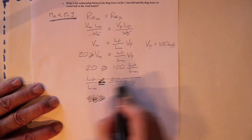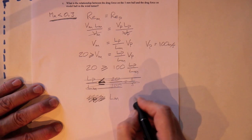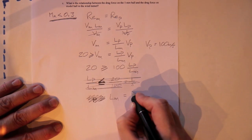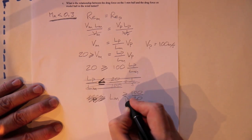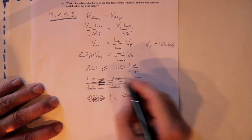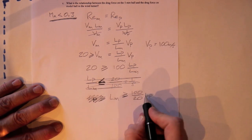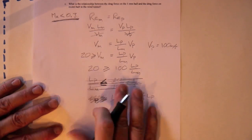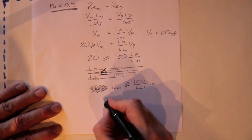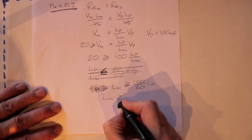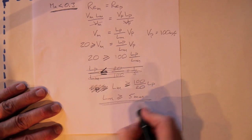20 will be greater than or equal to 100 times Lp over Lm. If we take the length of the model to the other side, we'll get Lm greater than or equal to 100 over 20 times the length of the prototype. So the model has to be five times bigger than the prototype. The prototype was one millimeter, so the model must be greater than or equal to five millimeters in order to get an acceptable result.